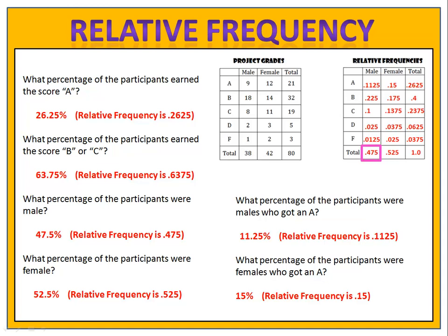How about females? Look at the bottom of the female column: 0.525, or 52.5%. What percentage were males who got an A? 0.1125, or 11.25%. Finally, what percentage were females who got an A? 0.15, or 15%.